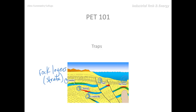So again, the anticlinal trap was formed in this anticline. There was a separation, and this particular strata had some denser rocks, so oil and gas and even water were able to accumulate and move upward and then got trapped.